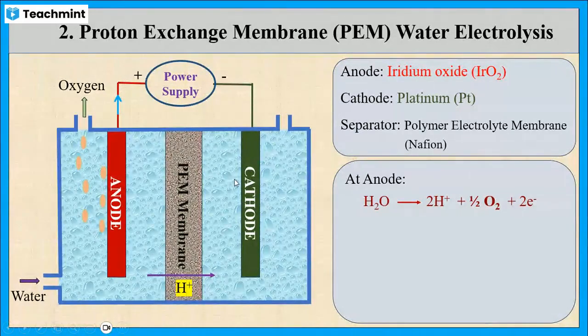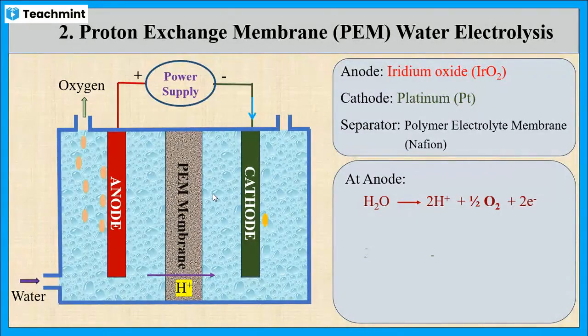At cathode, there will be a recombination of protons and electrons. This produces hydrogen gas.